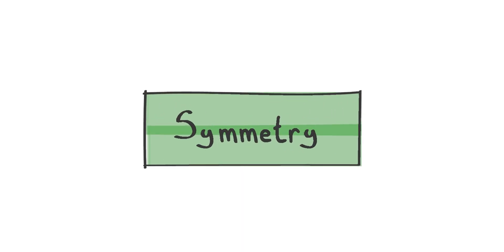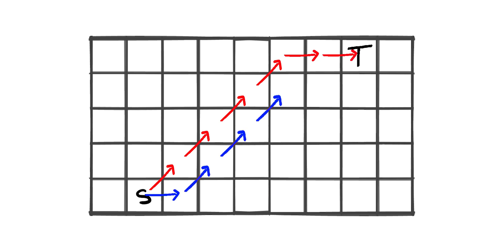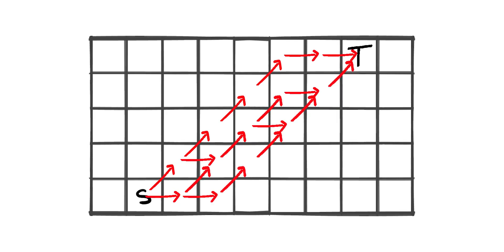To kick things off we're going to be looking at the concept of symmetry. This is something that afflicts many a pathfinding algorithm but something that jump point search looks to address. The red path consists of four diagonal moves and two horizontal moves. The blue path, although taking a different route, also consists of four diagonal moves and two horizontal moves, meaning they have the exact same cost. The same goes for the green path and the purple. In fact, stepping along any of these routes results in a path of four diagonal moves and two horizontal moves. This is symmetry. And if we can search for a path from the start node to the target node without having to search all these symmetrical routes, it will speed things up.